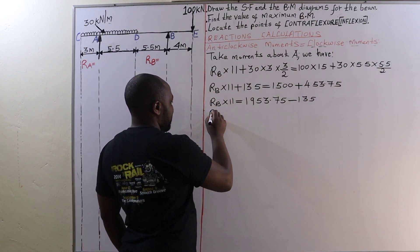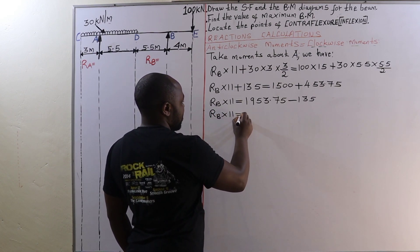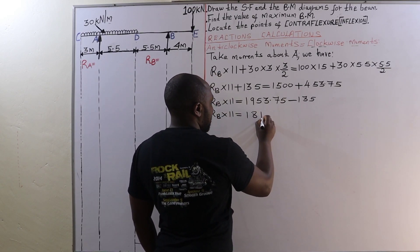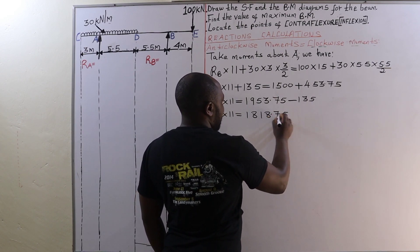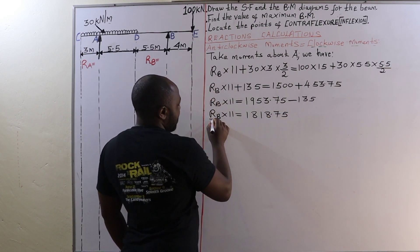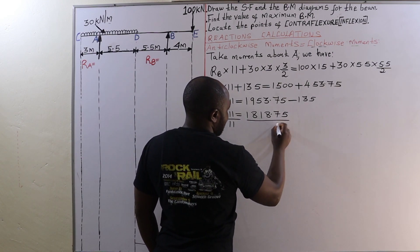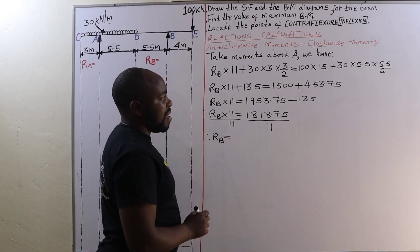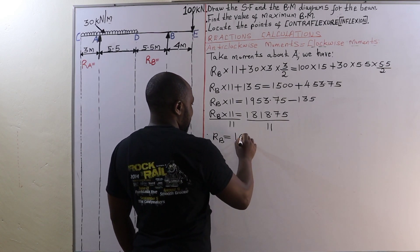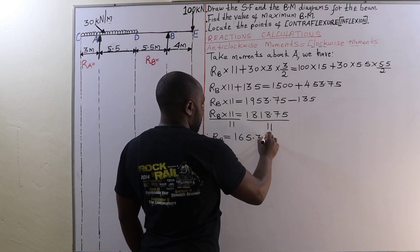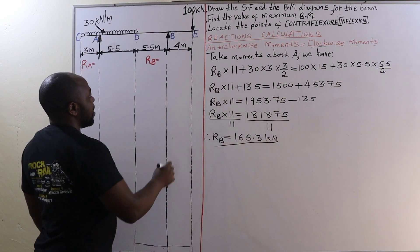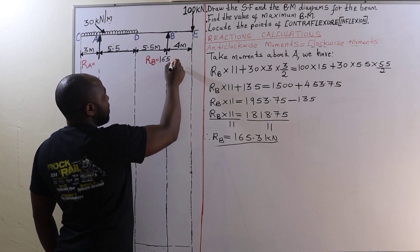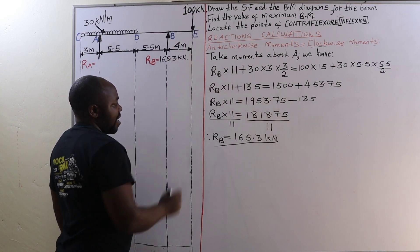RB times 11 equals, when we find the difference between these two, 1,818.75. To get the value of RB, we divide both sides by 11. Therefore, the reaction at B is 165.3 kilonewtons. We write that reaction at this point: 165.3 kilonewtons.